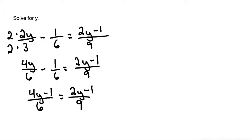From here, we need to get a common denominator between the two sides. So if we multiply 6 by 3, and we multiply 9 by 2, we get to 18. So let's multiply top and bottom by 3 here, and by 2 as well here. And I'll go over to this side.